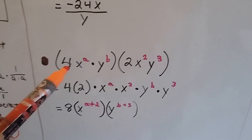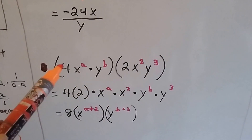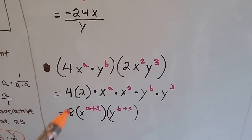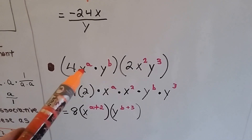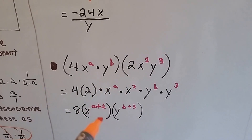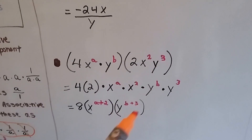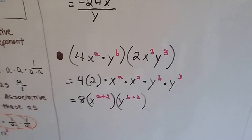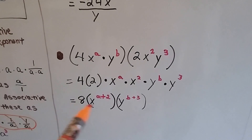For this one, we multiply these terms together. We multiply the coefficients: four times two makes eight. We add the exponents for a to get a to the two, and we add the exponents for b to get b to the three. That's as far as we can simplify — that's our answer.